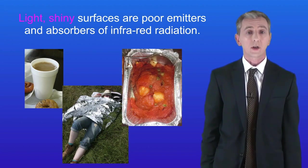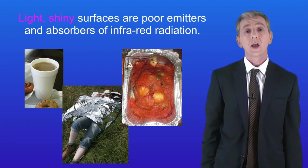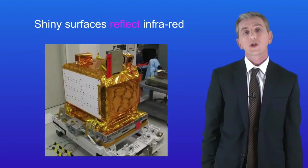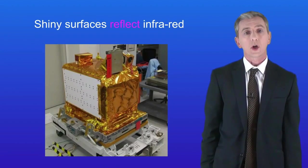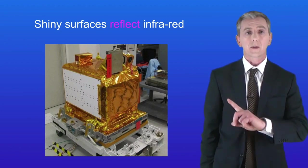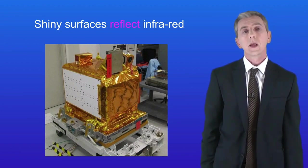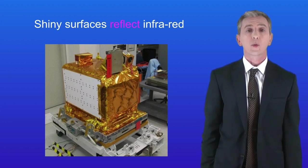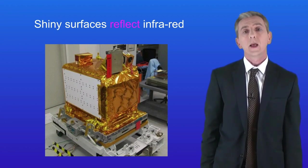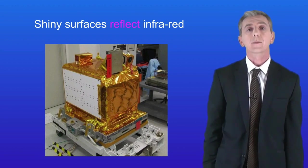This food is kept hot in a foil case because it's shiny so it won't lose heat by infrared. Shiny surfaces don't absorb infrared either. This space probe is covered with foil which doesn't absorb infrared heat from the sun. In fact, foil simply reflects infrared heat back.